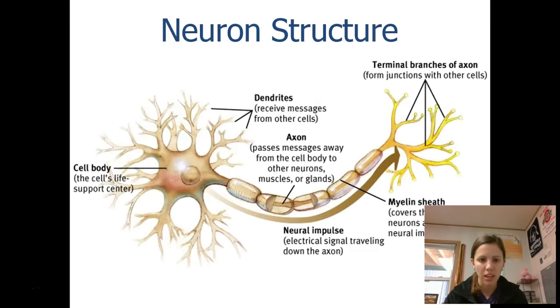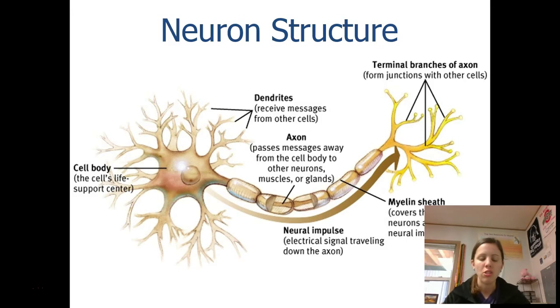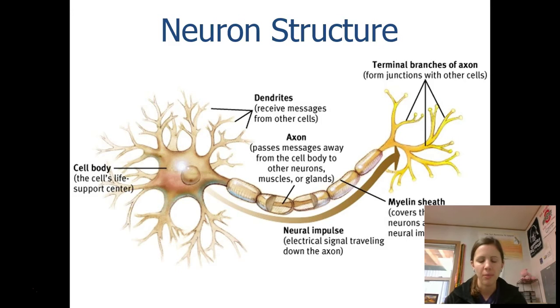What I want you to do right now is copy down this picture — draw your own little neuron on your paper and we're going to label its parts and talk about what each of these parts are.